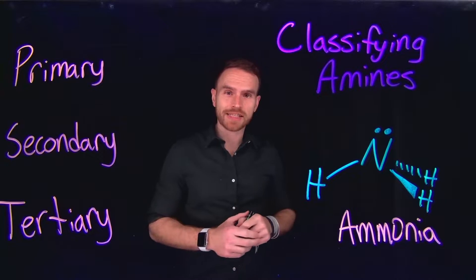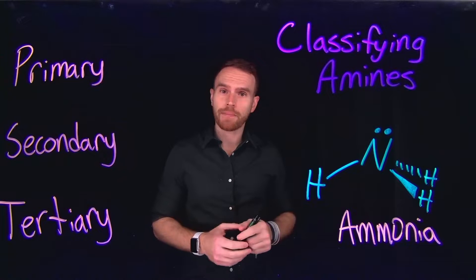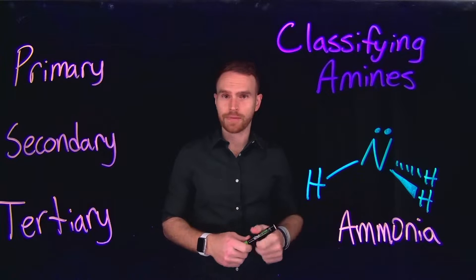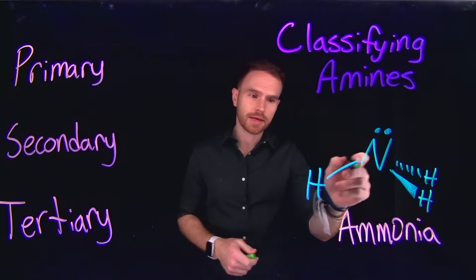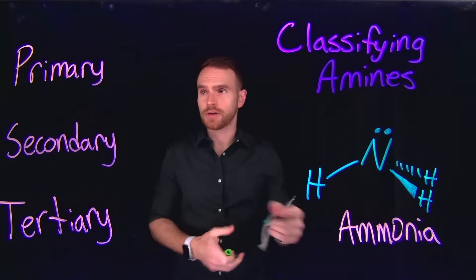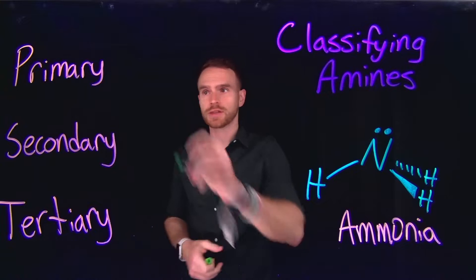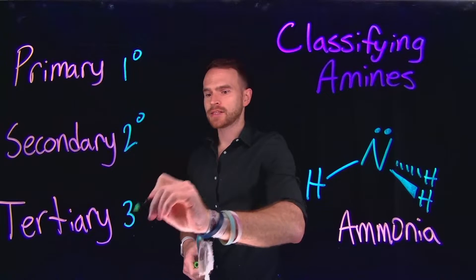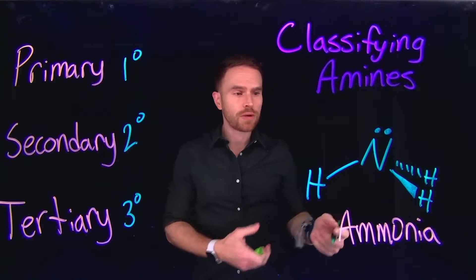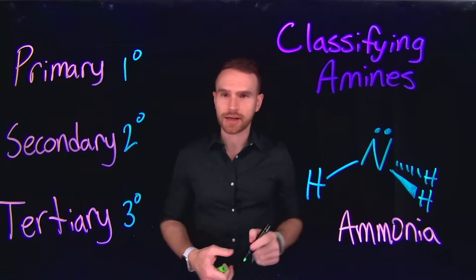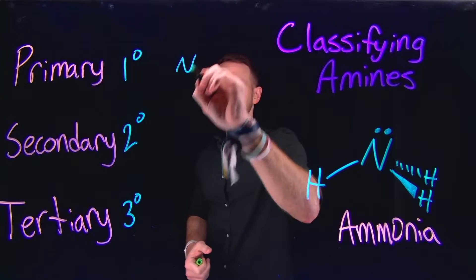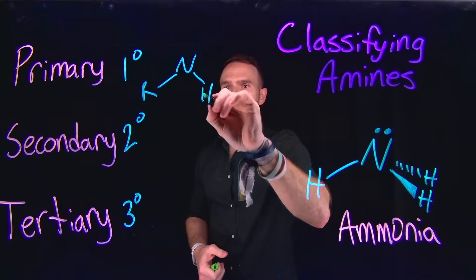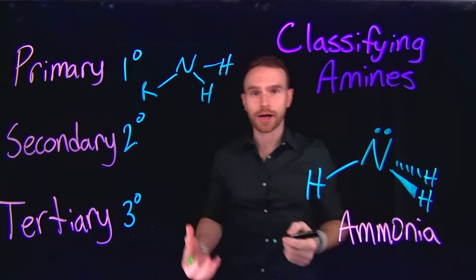First, let's begin by classifying amines. Amines are compounds derived from ammonia, which has a chemical formula of NH3. If we replace the N-H bonds with different organic substituents, this gives rise to primary, secondary, and tertiary amines. So if we place an alkyl group at one of the nitrogen-to-hydrogen positions, this generates a primary amine, where the other two substituents are still hydrogen atoms.